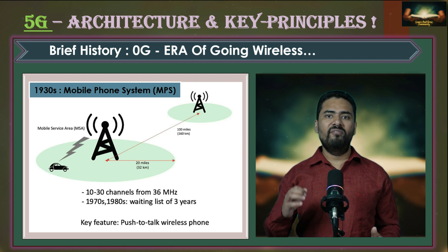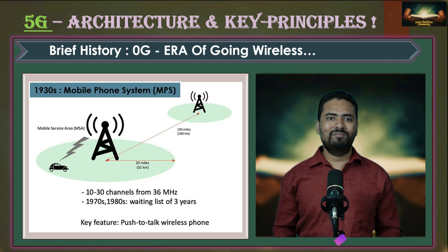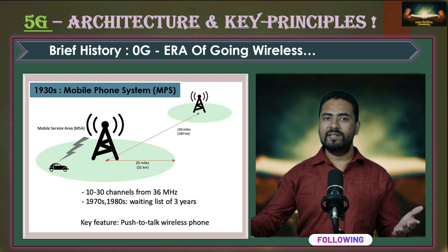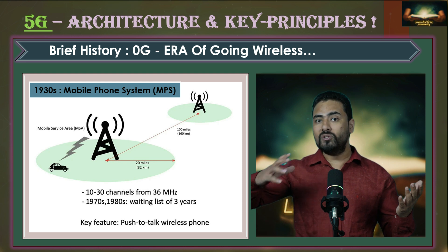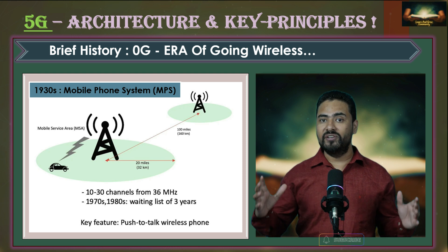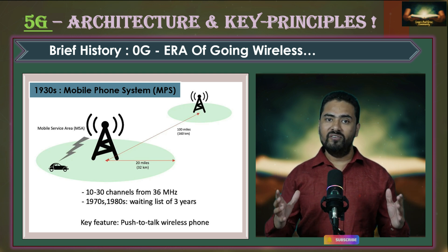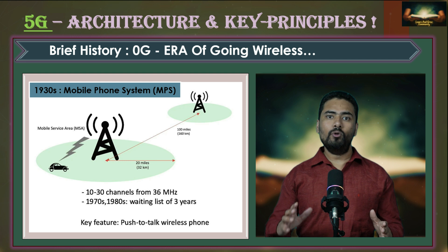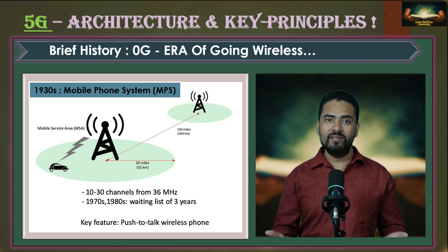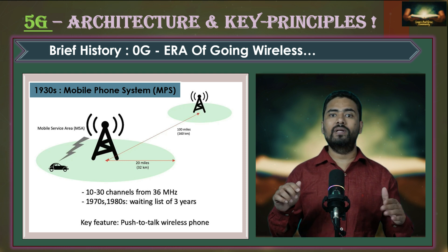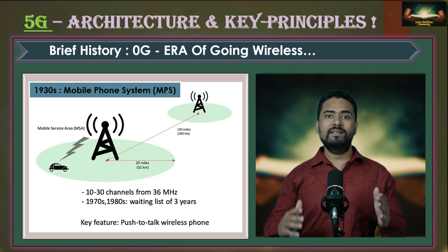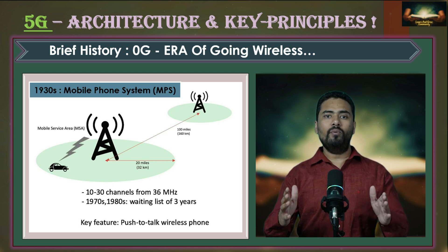These mobile phones were using a very basic feature called push to talk. The communication happened through a two-way radio connection between a network and a car-mounted transceiver. At that time there were huge transmission towers covering large areas. The key challenge was that service providers had to manually connect the calls to the regular phone networks, so operators had a lot of manual monitoring and also managed the channels being used for communication.